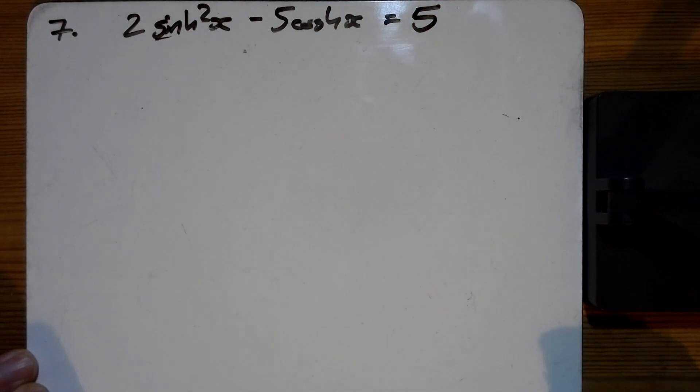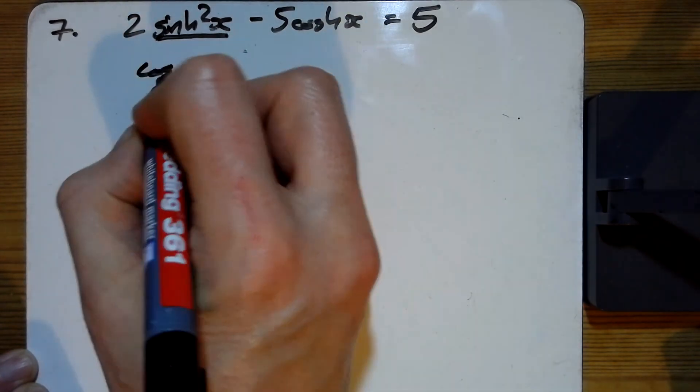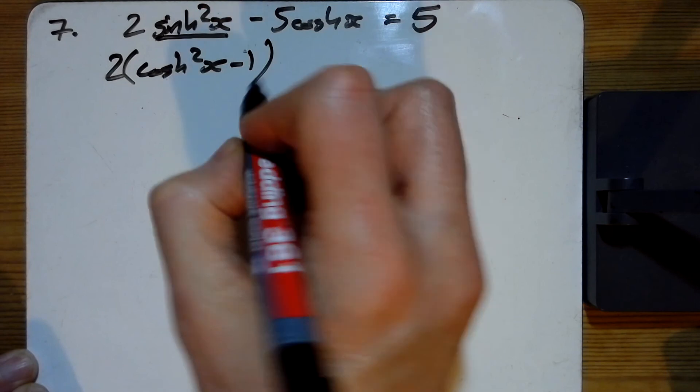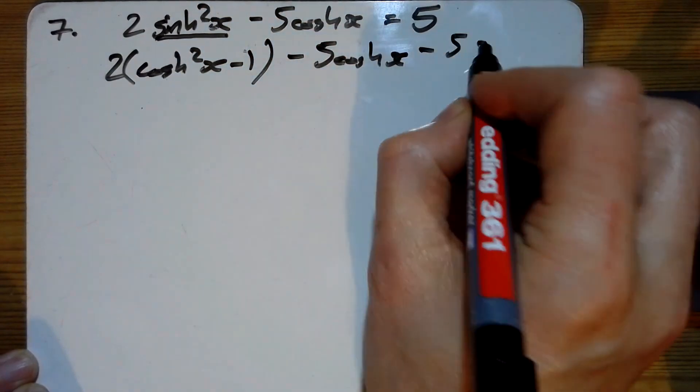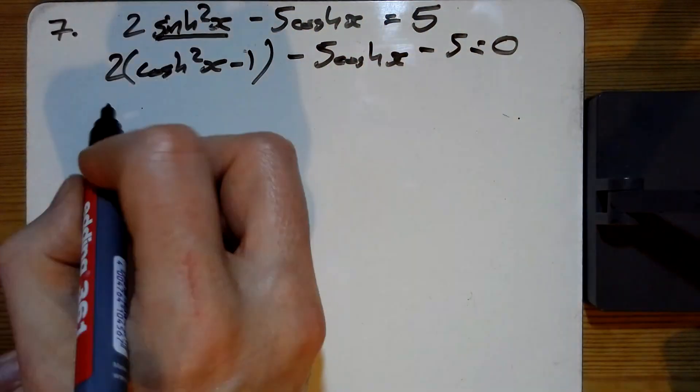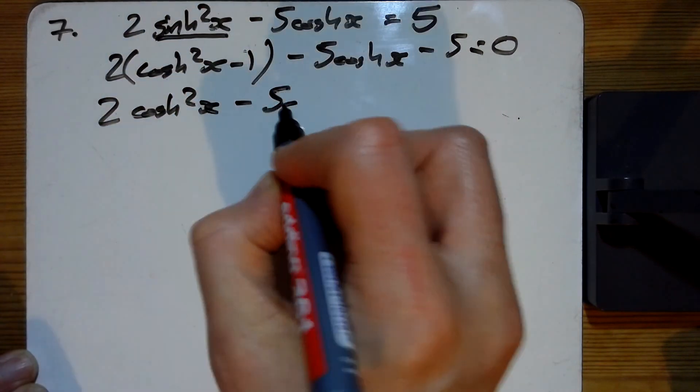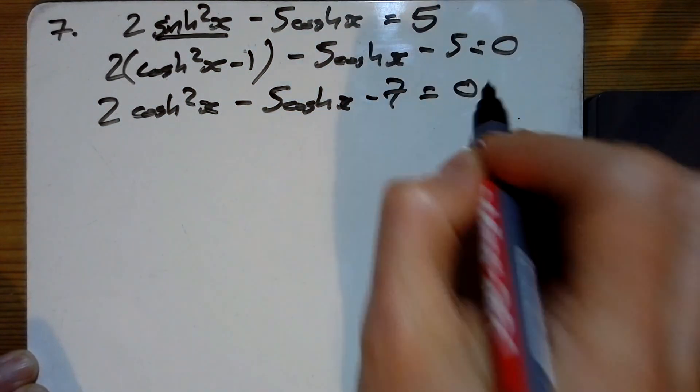2sinh²x - 5coshx = 5. We're going to use the cosh²x - 1 identity to make it into a quadratic in cosh. So I've got 2cosh²x - 5coshx - 7 = 0.